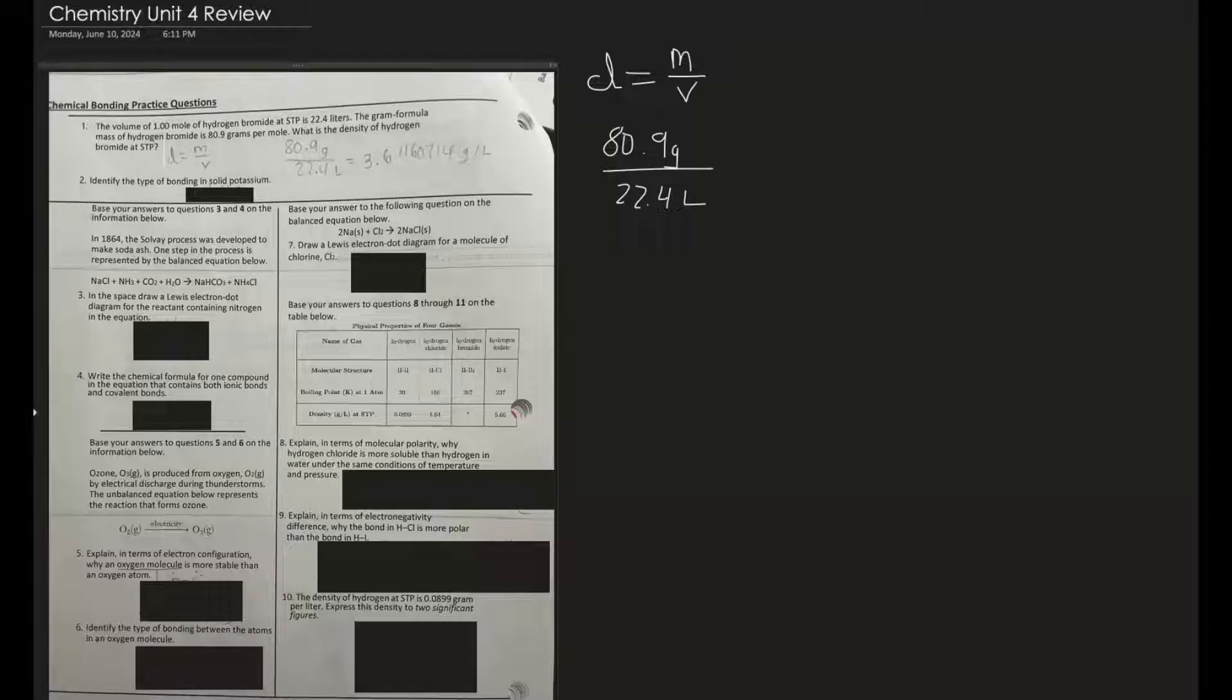So that is 80.9 grams over the volume, which they give us as 22.4 liters. We just do the math there, and you can see that it is 3.6 grams per liter as the density.